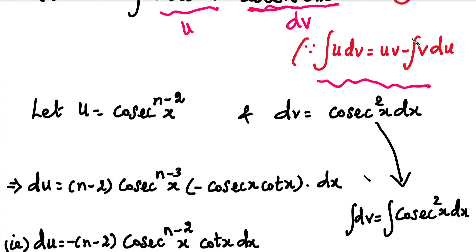Using the integration by parts formula, we identify the u value and the dv value. From u we find du by differentiation, and from dv we find v by integration. So we will be able to compute both the u·v term and the integral of v·du term.